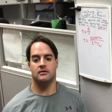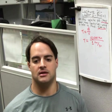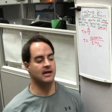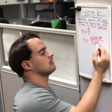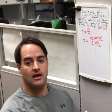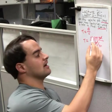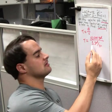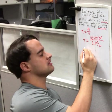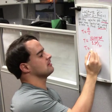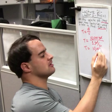The kilometers cancel. And now you simply divide — 10,000 divided by 1 is 10,000 years.